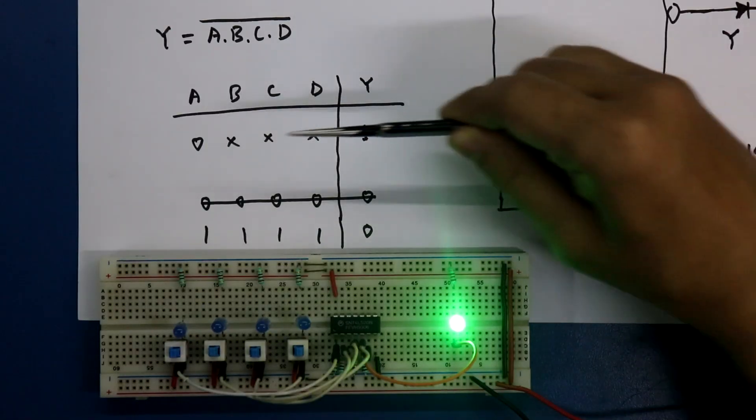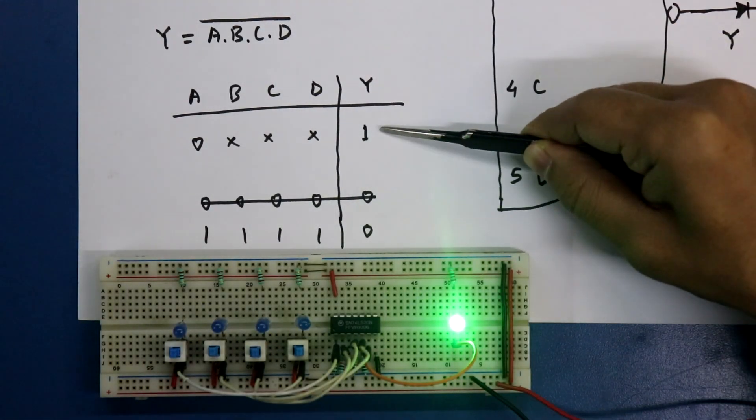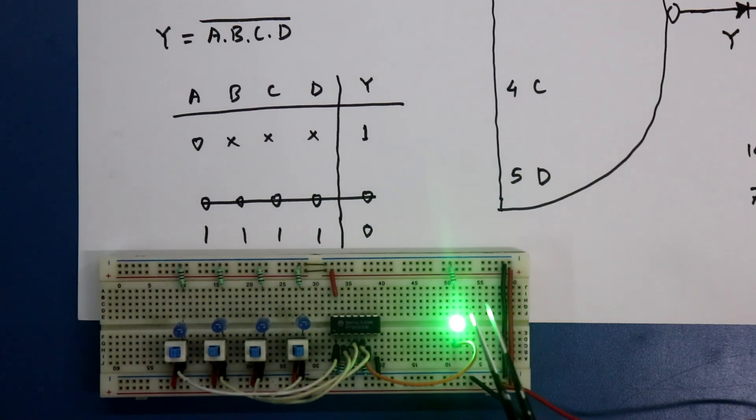As you can see, if any input is zero, we will get one. Here all the inputs are zero, we are getting one.